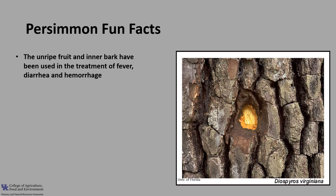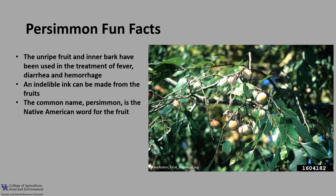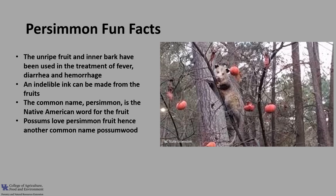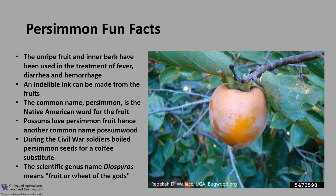Now for a few fun facts about common persimmon. The unripe fruit and the inner bark have been used in the treatment of fever, diarrhea, and hemorrhage. An indelible ink can be made from the fruits. The common name persimmon is the Native American word for the fruit. Possums love persimmon fruit — hence another common name, possumwood. During the Civil War, soldiers boiled persimmon seeds for a coffee substitute. The scientific genus name Diospyros means fruit or wheat of the gods.